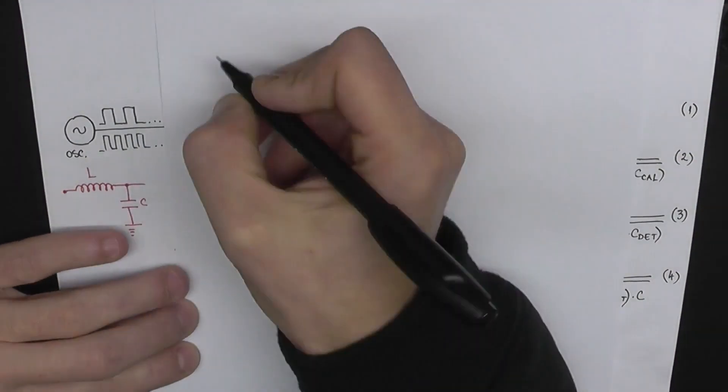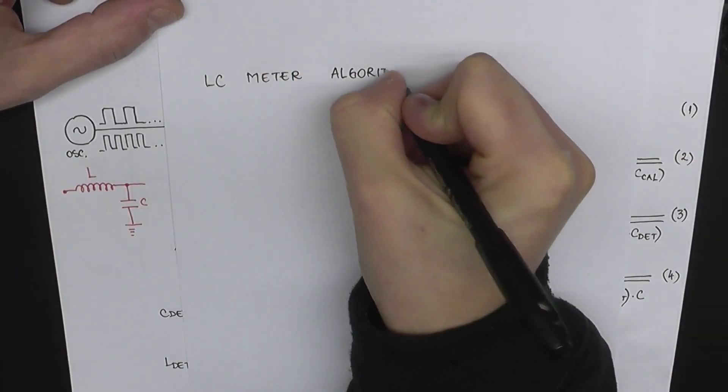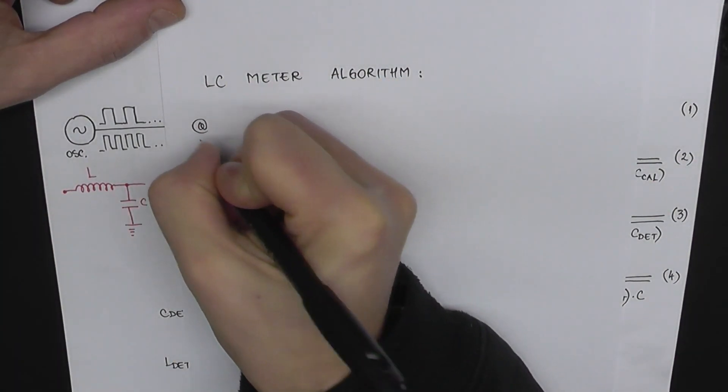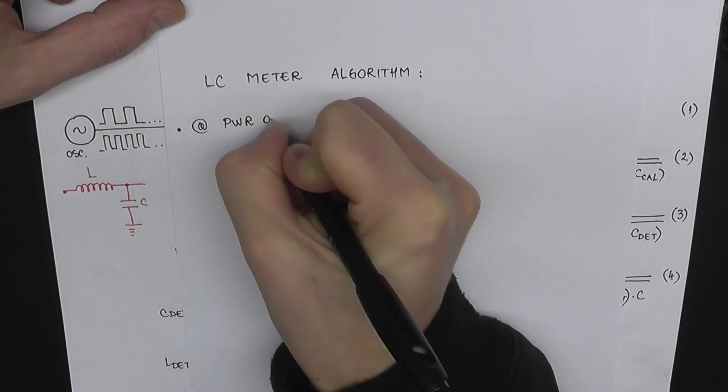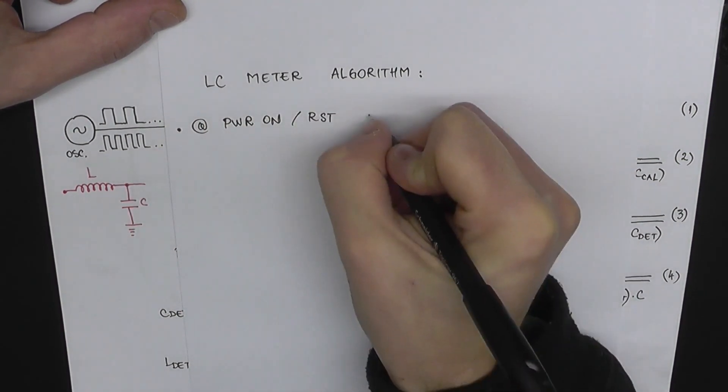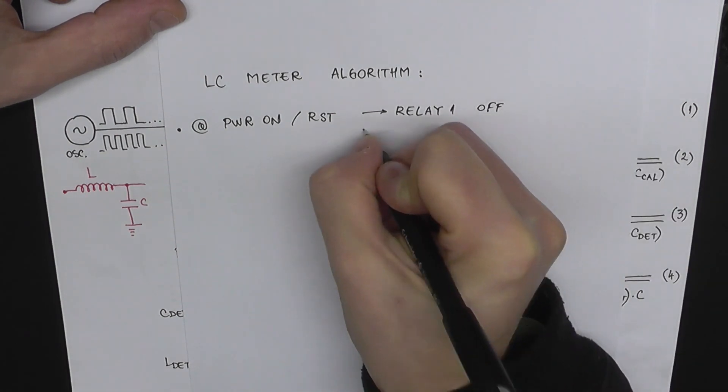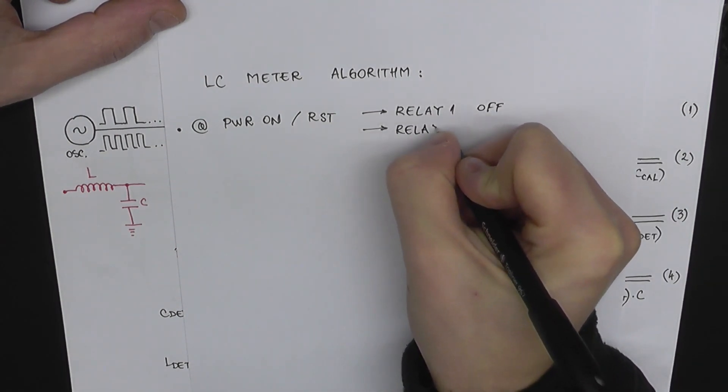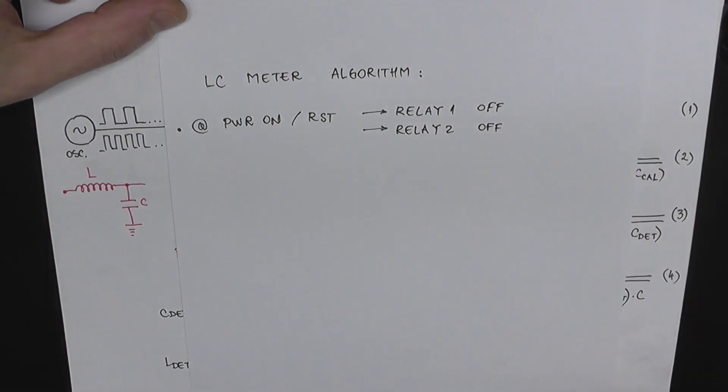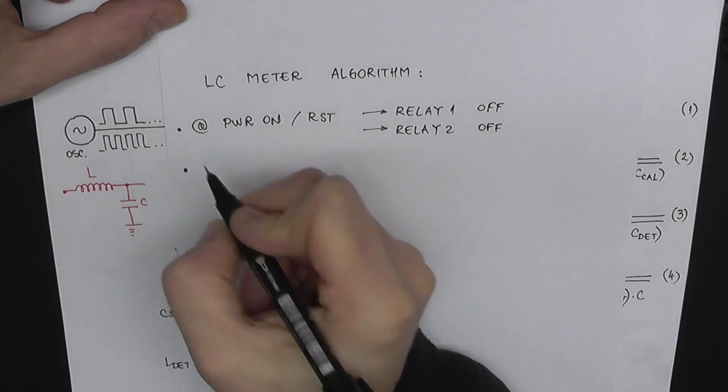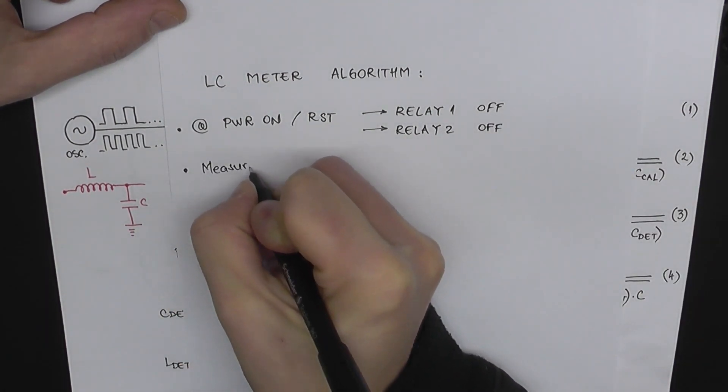These are the steps that I want to implement in software. Each time we power up the system or whenever we do a reset, we want to disconnect any additional inductance or capacitance from the oscillating circuit, so for that both relays must be off. Next, we measure the frequency of the oscillating circuit.